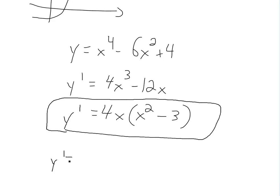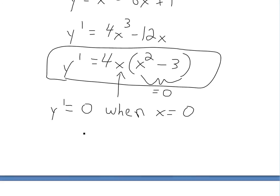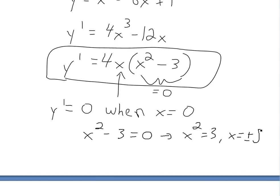Setting y prime equal to 0, we look at each factor. The first factor gives x equals 0. For the second factor, x squared minus 3 equals 0, which means x squared equals 3, so x equals plus or minus square root of 3.